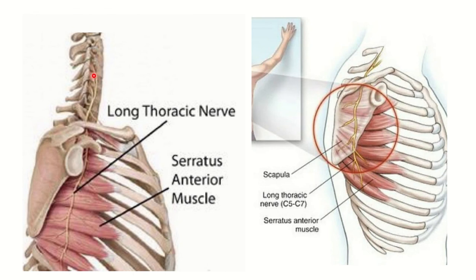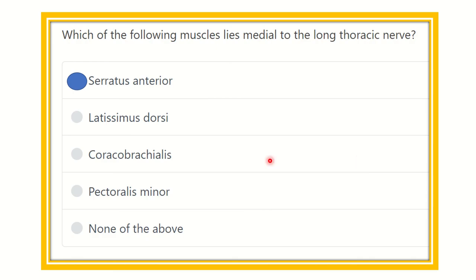The long thoracic nerve arises from the brachial plexus and goes down. We can see a muscle which lies medial to it — this muscle is the serratus anterior. In the second picture, we can also see the serratus anterior muscle. It is situated anterior and medial to the long thoracic nerve. So our final answer is serratus anterior.